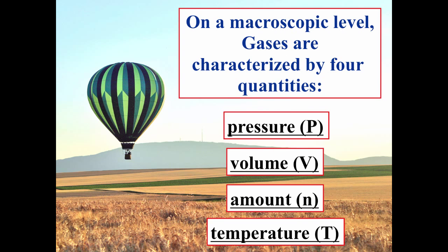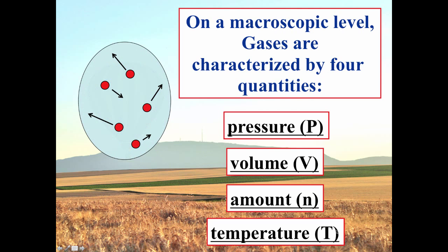On a macroscopic level, we characterize gases by four different variables: pressure P, volume V, amount of gas in moles n, and temperature T. A gas is made up of very small particles — molecules or atoms — that are fairly far apart from each other. They move around constantly and chaotically, occupying the complete volume of whatever container they are in.